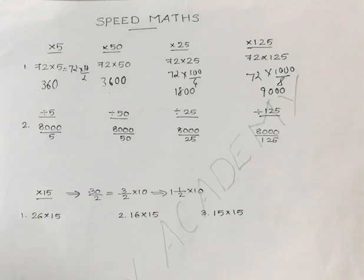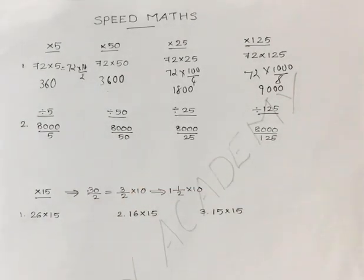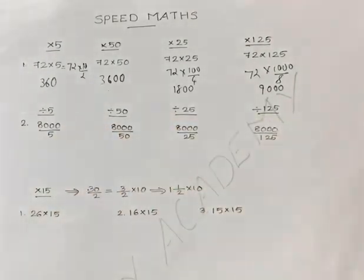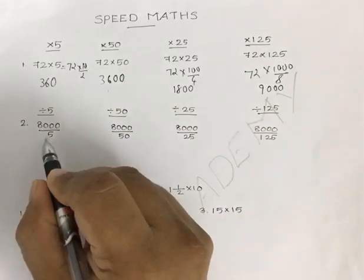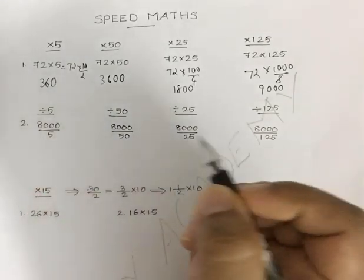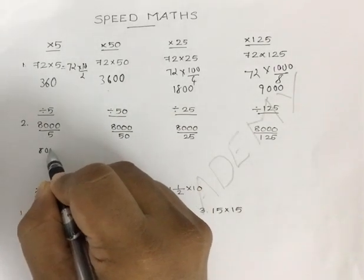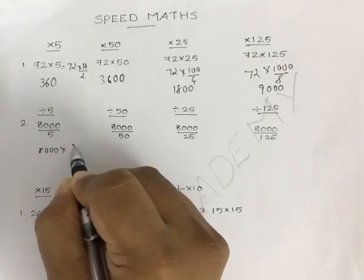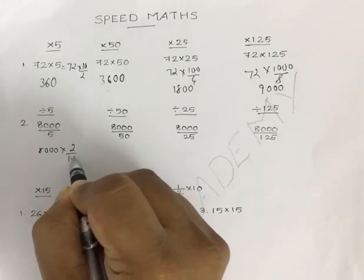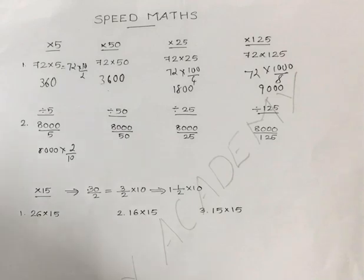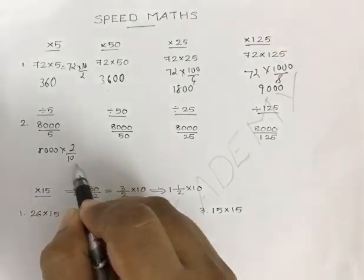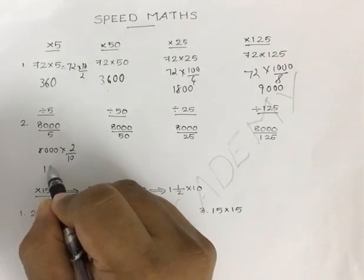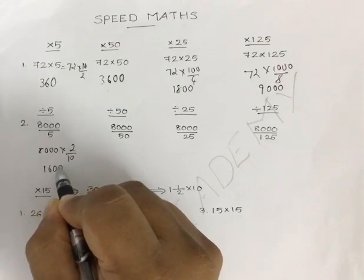Now we apply the reverse logic for division with 5, 50, 25, and 125. So 8000 divided by 5 means it is 8000 divided by 10 by 2, or multiplied by 2 by 10. What you do is strike out a zero and multiply with 2 — so 800 into 2 gives 1600.